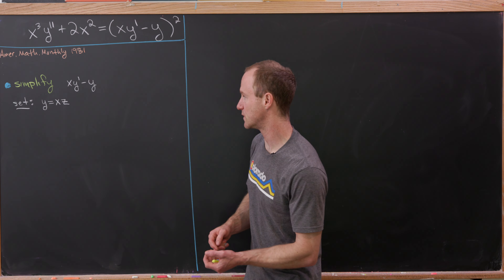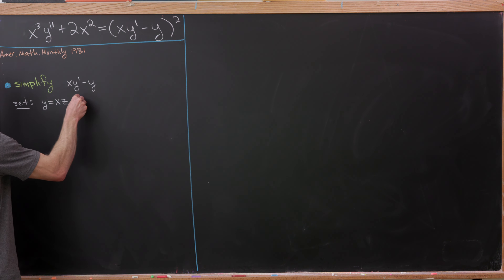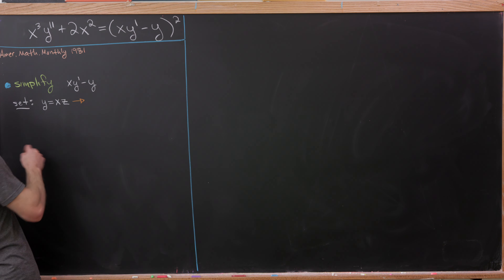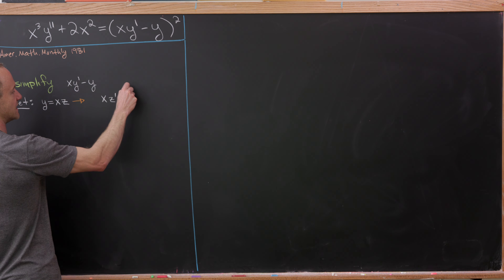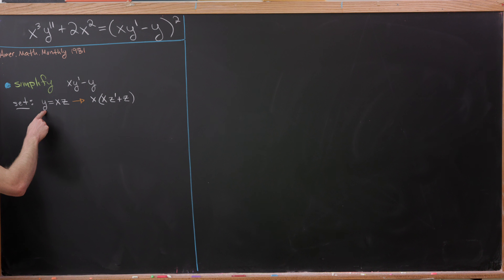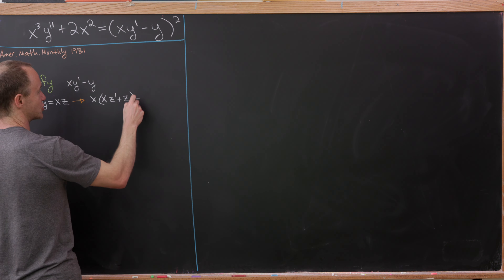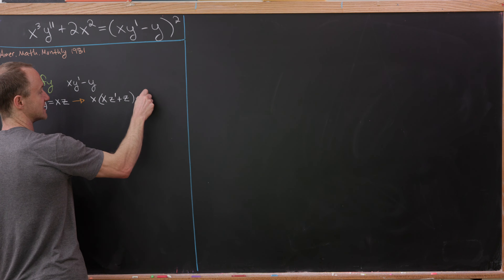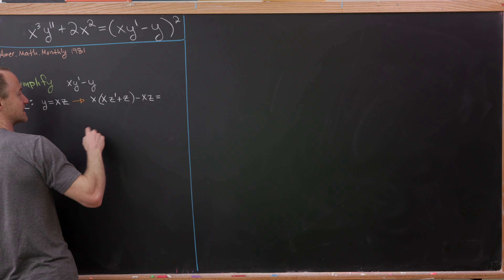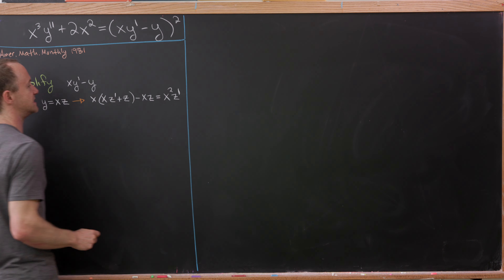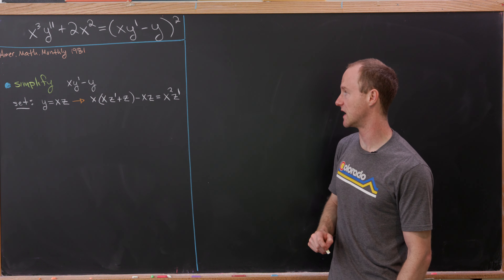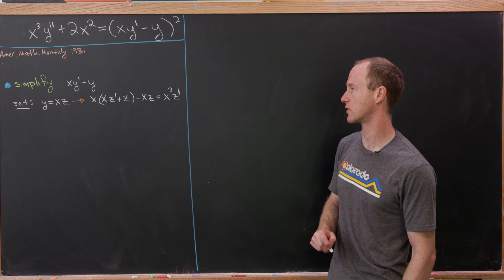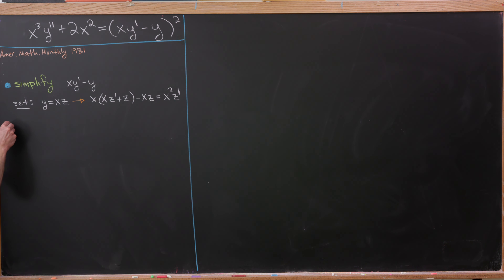Let's see what happens if we set y = xz. Then y' = xz' + z. Now multiplying by x gives xy' = x²z' + xz, and subtracting y = xz gives xy' - y = x²z'. So the right-hand side simplifies to (x²z')² = x⁴(z')².